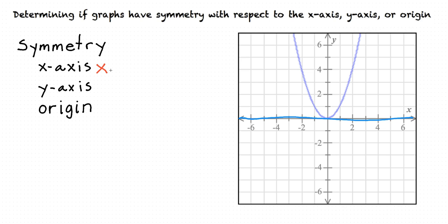So this means that there is no symmetry with respect to the x-axis. What if the y-axis were a mirror? Is the section to the left of the y-axis a reflection of the section to the right? Yes, it is reflected like a mirror. This means that there is symmetry with respect to the y-axis.